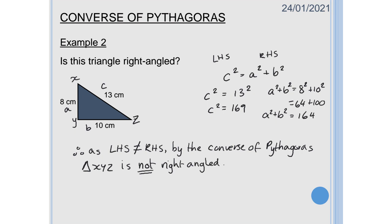So again just to go back over that left hand side right hand side find your solution for each if it's equal then the triangle is right angled if it's not equal then the triangle is not right angled